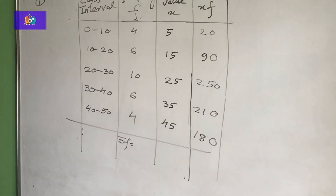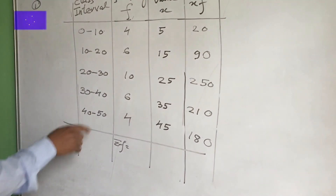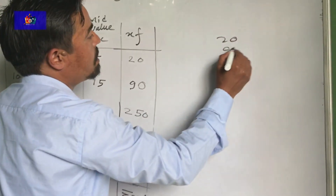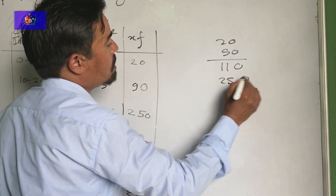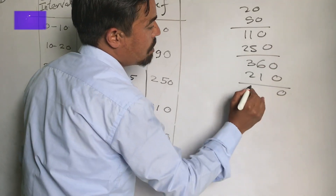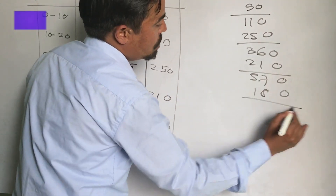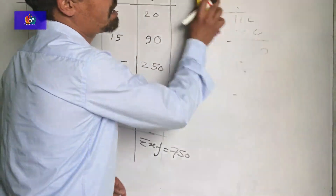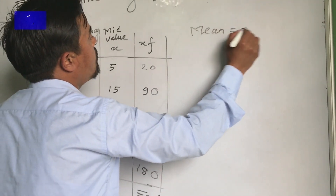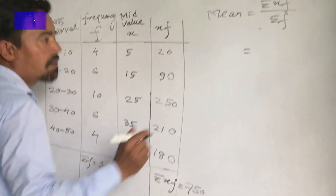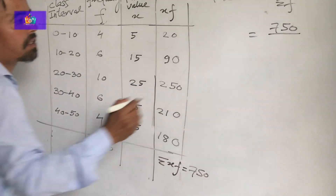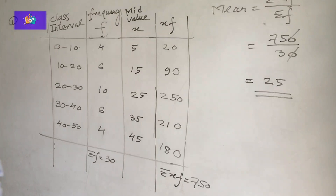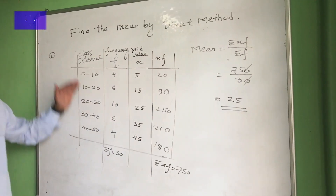Summation XF: 20 plus 90 is 110, plus 250 is 360, plus 210 is 570, plus 180 is 750. So summation XF is 750. Mean equals summation XF divided by summation F, which is 750 divided by 30 equals 25. So mean equals 25 by the direct method for this discrete frequency distribution question.